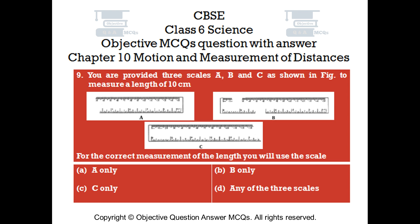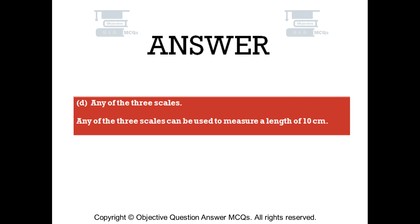Question number 9. You are provided three scales A, B and C as shown in the figure to measure a length of 10 centimetres. For the correct measurement of the length, you will use: Option A, A only; Option B, B only; Option C, C only; Option D, any of the three scales. The right answer is Option D, any of the three scales. Any of the three scales can be used to measure a length of 10 centimetres.